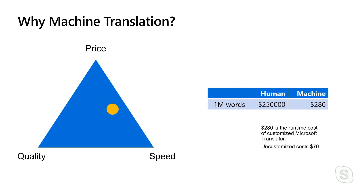As you move out of those most translated languages, there's just less training material available, so the vocabulary coverage and fluency go down a little bit for languages not in the top 10. To translate a million words, you pay about $250,000 for human translation quality. With the machine, the most expensive service — customized machine translation — costs $280, and the cheapest would cost you $70.